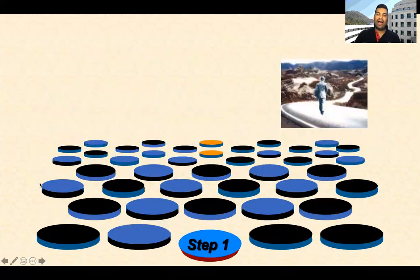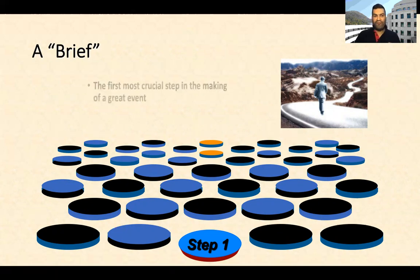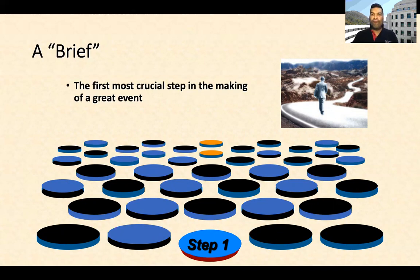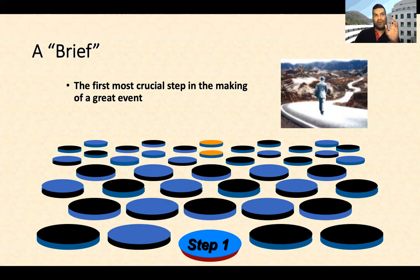Let's move forward and understand the steps taken to get to know a client better. The first step is a brief. It is one of the most fundamental and crucial steps of making a great event. Often 99 times out of 100, an event fails because both the client and the agency didn't get the brief right. Taking a brief and giving one is an art. You need to understand the formula, the process, the steps, and make sure you implement those steps in the structured way every single time. This starts with the brief.